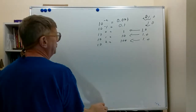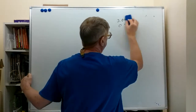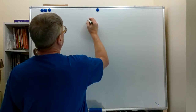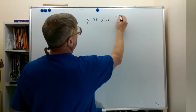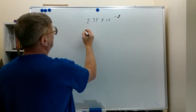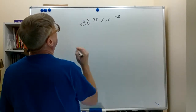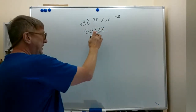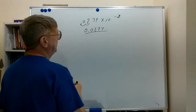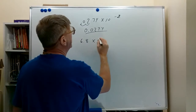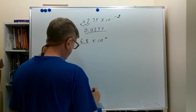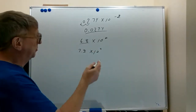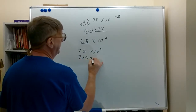Converting scientific notation to regular numbers: if I have 2.74 times 10 to the minus 2, we move our decimal place 2 places to the left, giving us 0.0274 in standard notation. If we have 6.8 times 10 to the 0, there's no movement — that's just 6.8. If we have 7.3 times 10 to the 3rd, we move the decimal 3 places to the right, giving us 7,300.